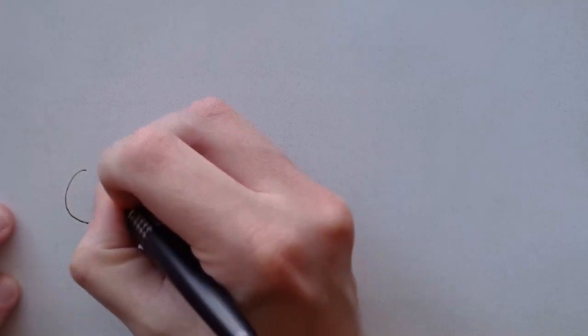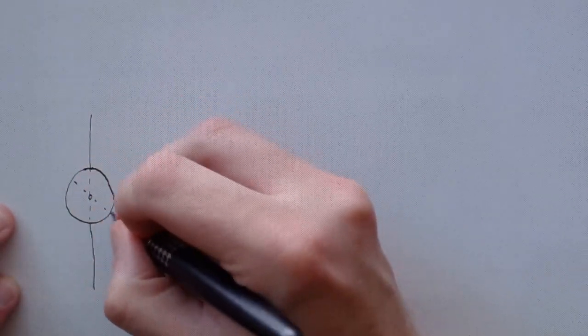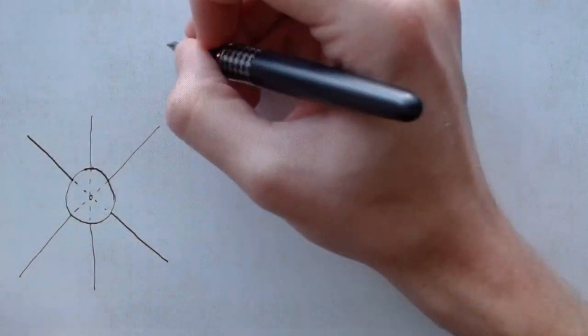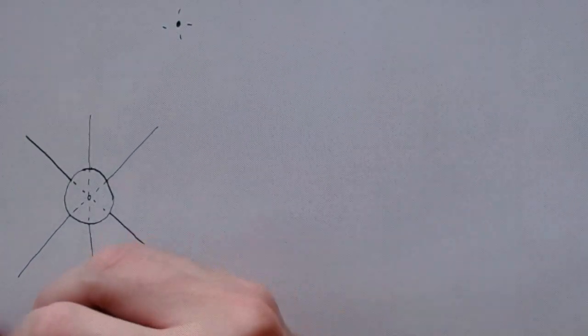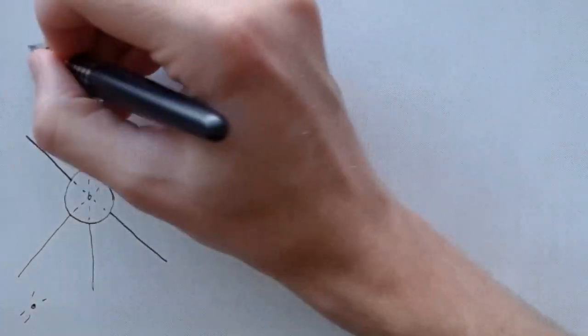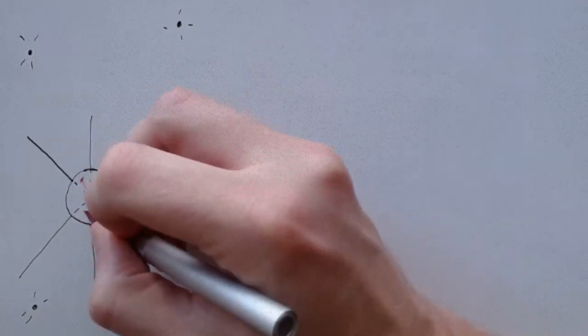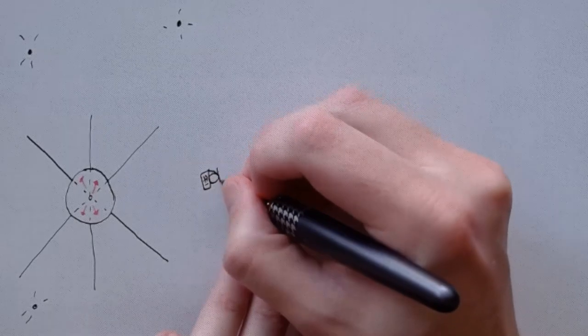ICRF coordinates are in a three-dimensional grid. One coordinate goes roughly north-south through the center of the Earth, and the others are at right angles to that, and also each other. They're keyed to a bunch of quasars super far outside our galaxy, so that as we move through the solar system, and the solar system moves through the universe, the coordinates don't change too much.